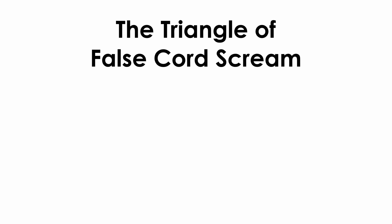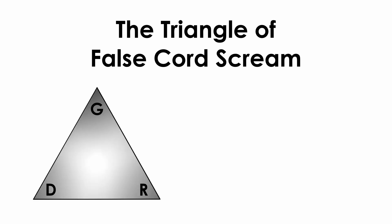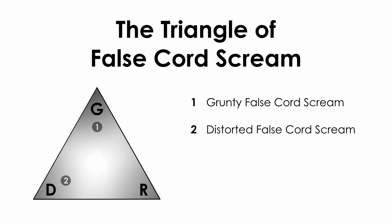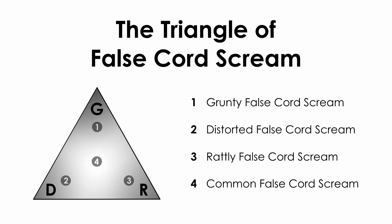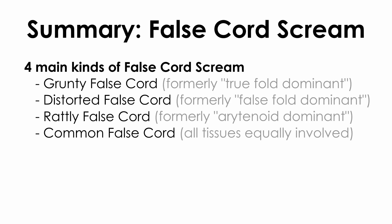Here's a little triangle of false chord scream. We could identify four points on this triangle: the more grunty false chord, the more distorted one, the more rattly one, and the common false chord scream which is a nice mixture of all effects. Many more in-betweens are possible, but it's most practical to limit it to these four main kinds of false chord scream.